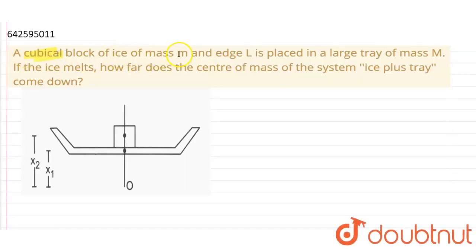A cubical block of ice of mass small m and edge length capital L is placed in a large tray of mass capital M. If ice melts, how far does the center of mass of the system ice plus tray come down? Okay, so in this question we need to find the center of mass.